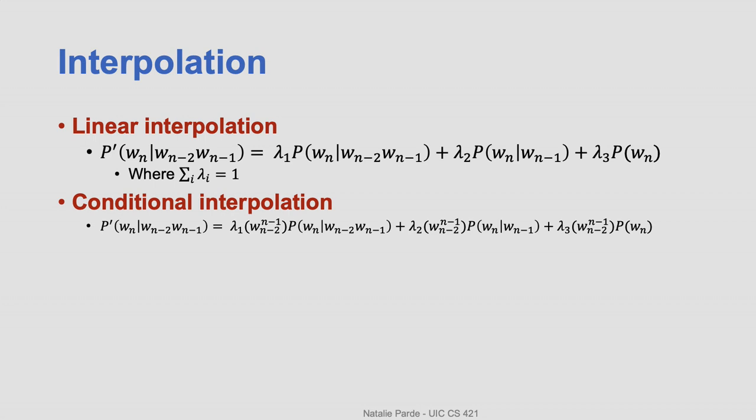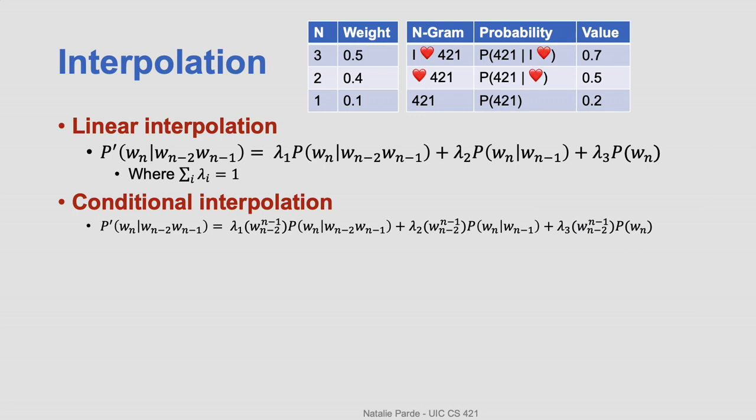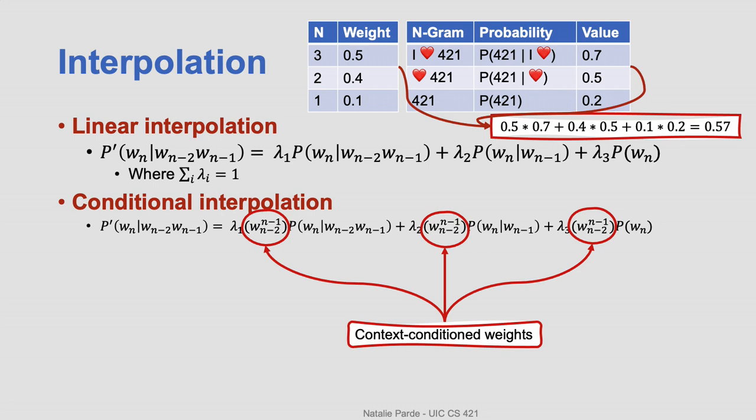I'll cover interpolation first. The equation for linear interpolation looks kind of complex at first glance, but really it isn't. You just choose weights that sum up to one with one weight per n-gram size and apply those weights to your n-gram probabilities. For conditional interpolation, you use the same equation, but just parameterize your weights based on context. This just means that we figure out ahead of time using a held out validation set which n-grams are particularly trustworthy, and then we weight those higher. For example, if we know that trigrams based on the expression I followed by a heart emoji are really accurate, then we can go ahead and give them higher weights than something we know is less accurate, like I followed by the taxi emoji.